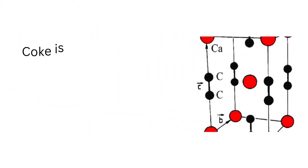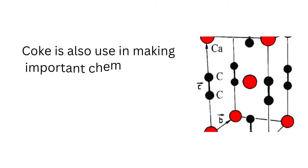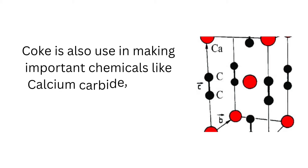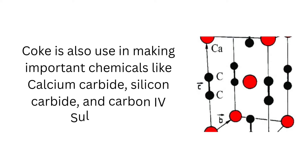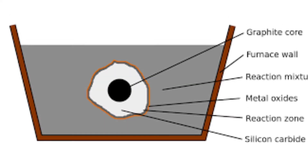Coke is also used extensively to synthesize certain chemicals like calcium carbide, silicon carbide, and carbon disulfide. These chemicals are very important. For example, calcium carbide is used in the synthesis of ethylene gas. Silicon carbide can be applied in extracting metals or in the glass industry. Carbon disulfide can be used to make nylon, cellophane, or even rubber. This is an illustration of the application of silicon carbide in the industry.